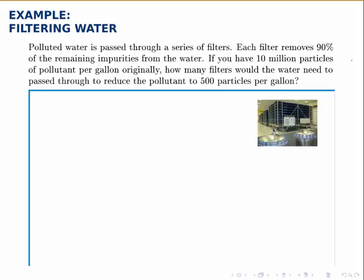This exponential modeling problem is a little bit different because now instead of thinking about time passing and the population increasing or decreasing, we're thinking about a number of filters that water will pass through and the amount of pollutant that's left after a certain number of filters. So in essence, T will represent the number of filters this time, and that's the unusual thing about this problem.